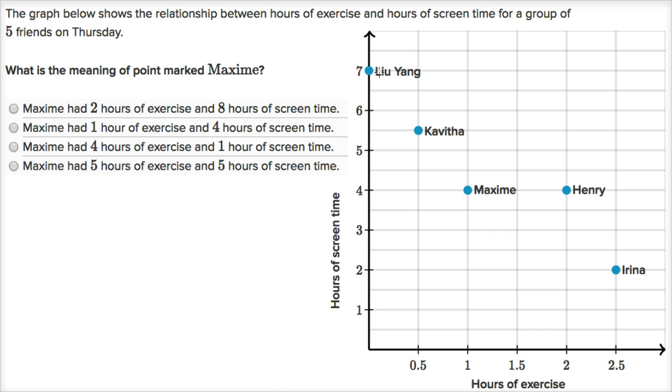And it looks like Kavitha spent half an hour, had half an hour of exercise on Thursday, this is all describing what happens on Thursday, and had five and a half hours of screen time. You see that right over there, and we could keep going with all the other data points. But let's see what they're asking us.